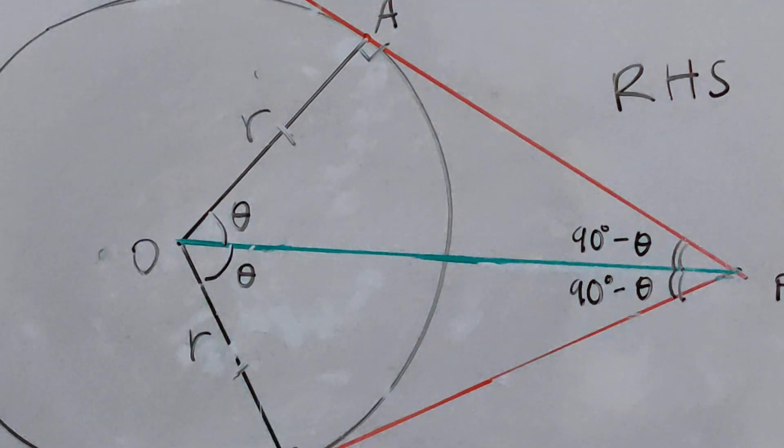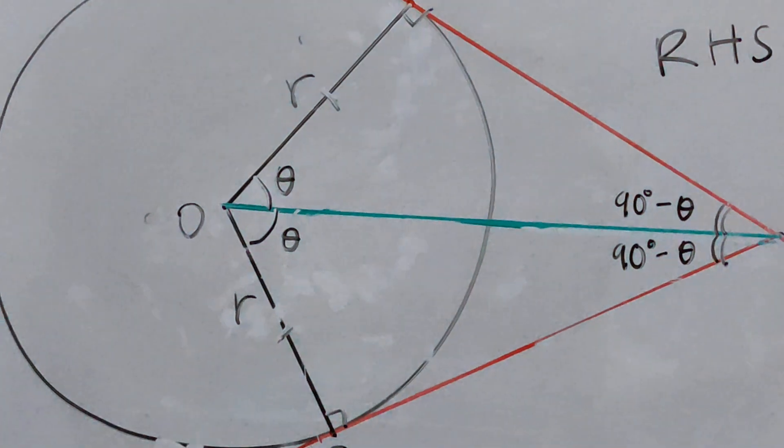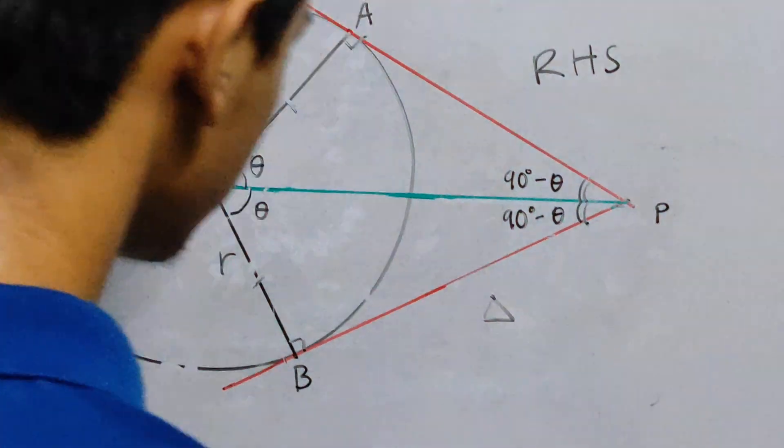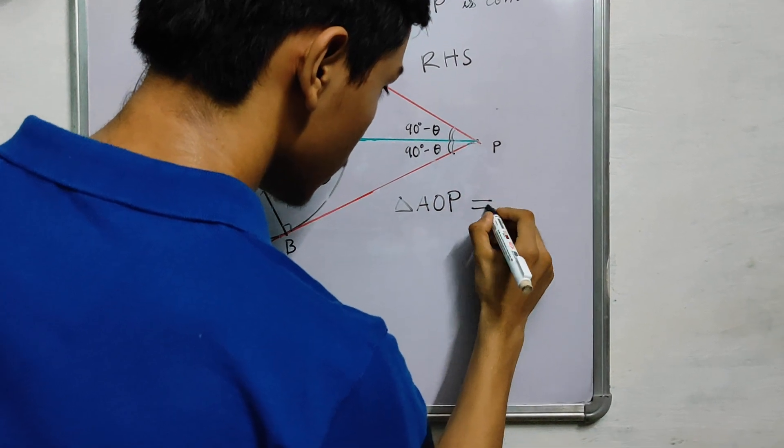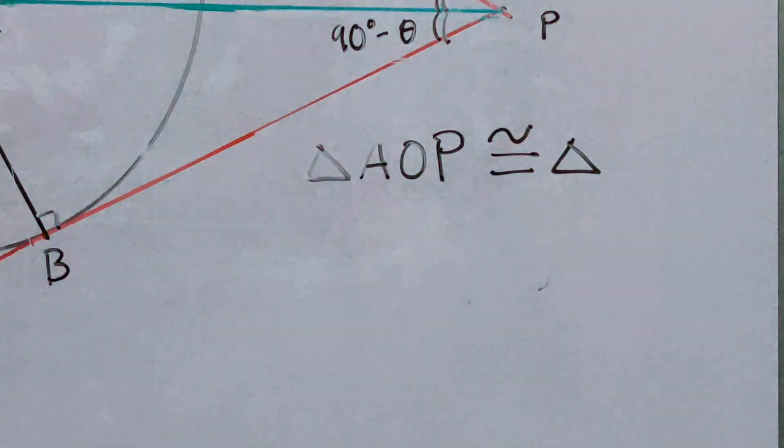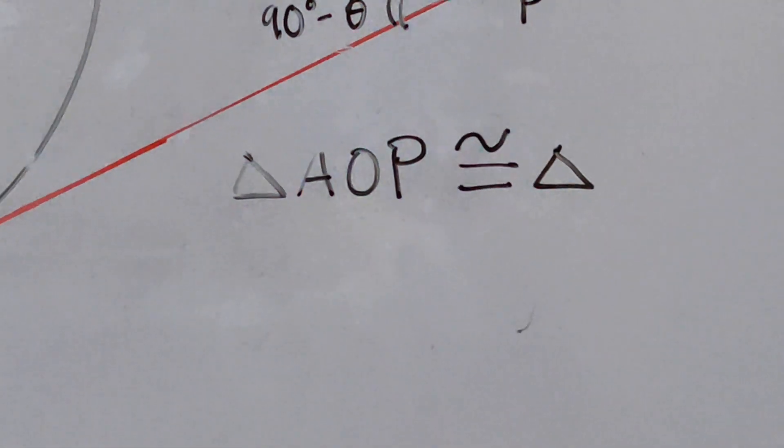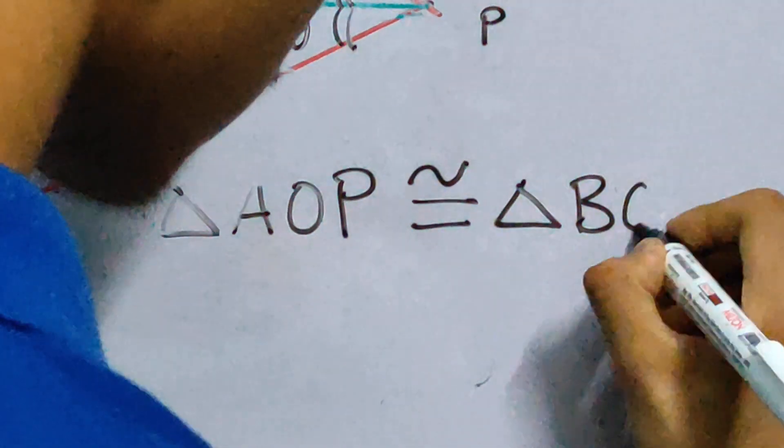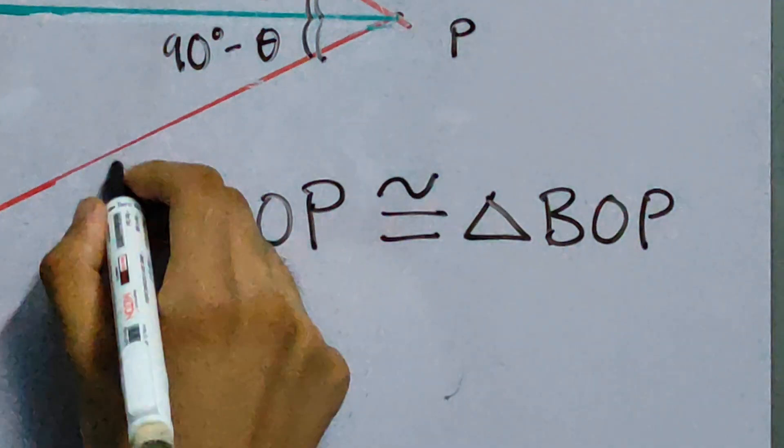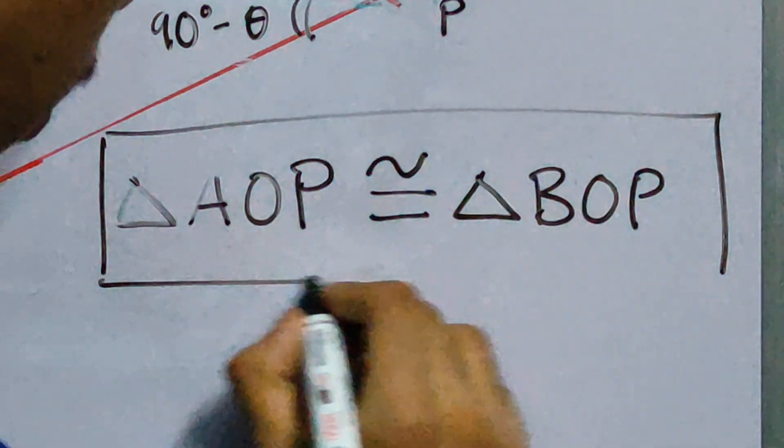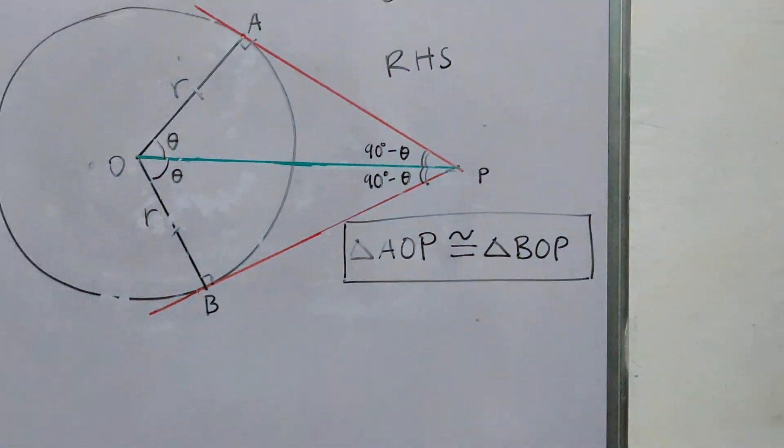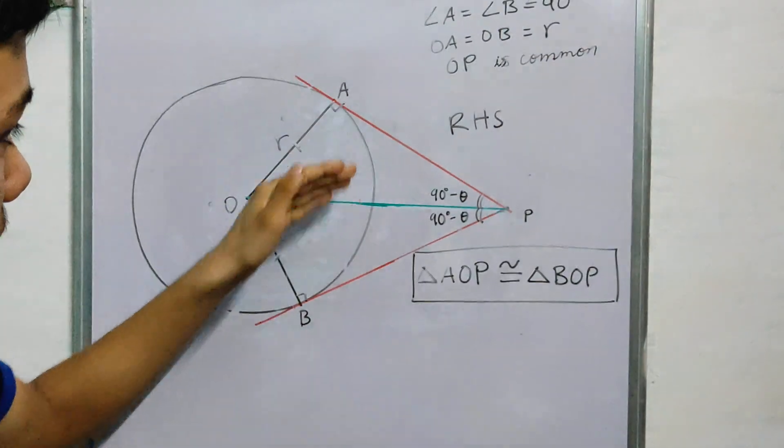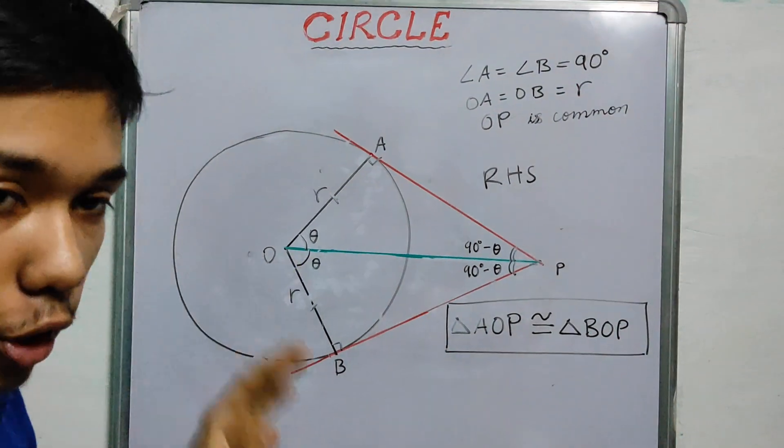So this is where I leave you. Triangle AOP is congruent to triangle BOP. Now, using this, using the fact that these two triangles are congruent, what can you make out of this?